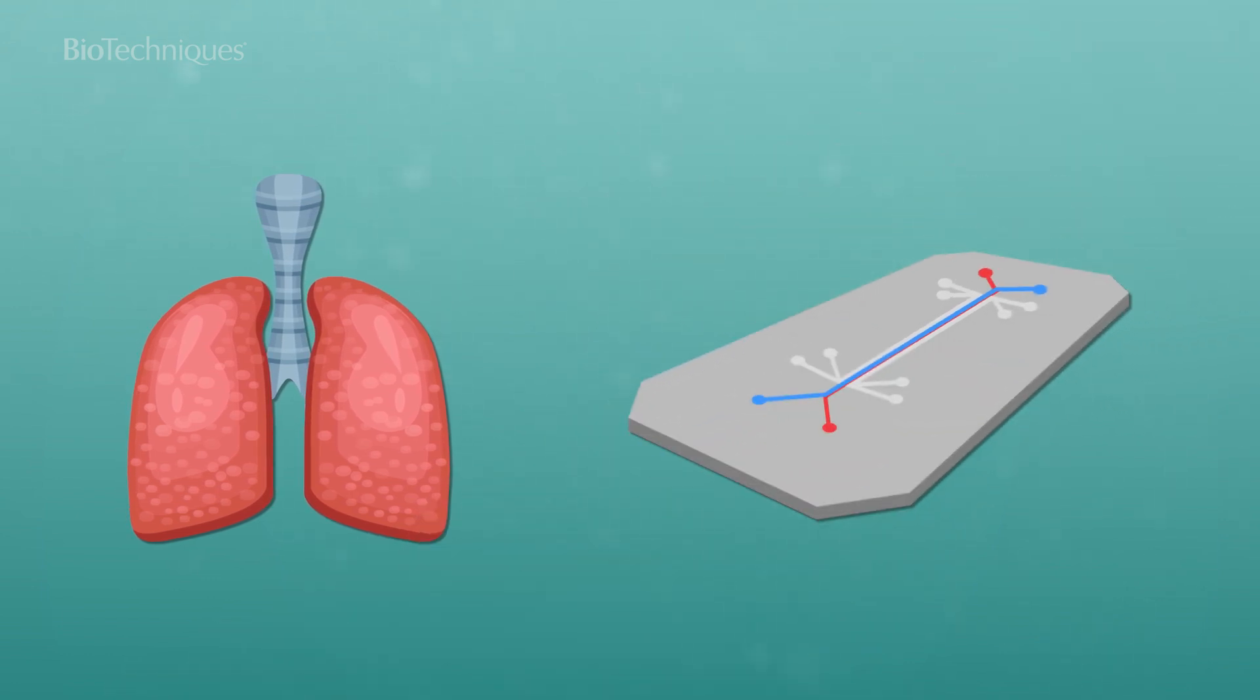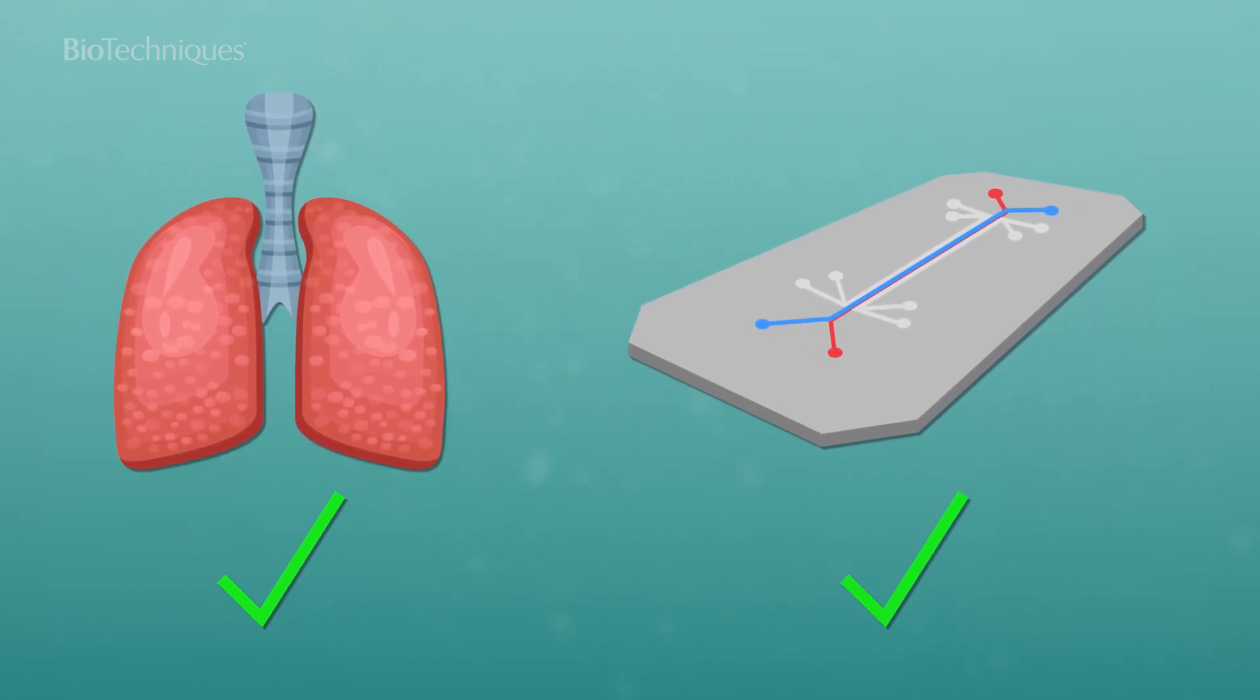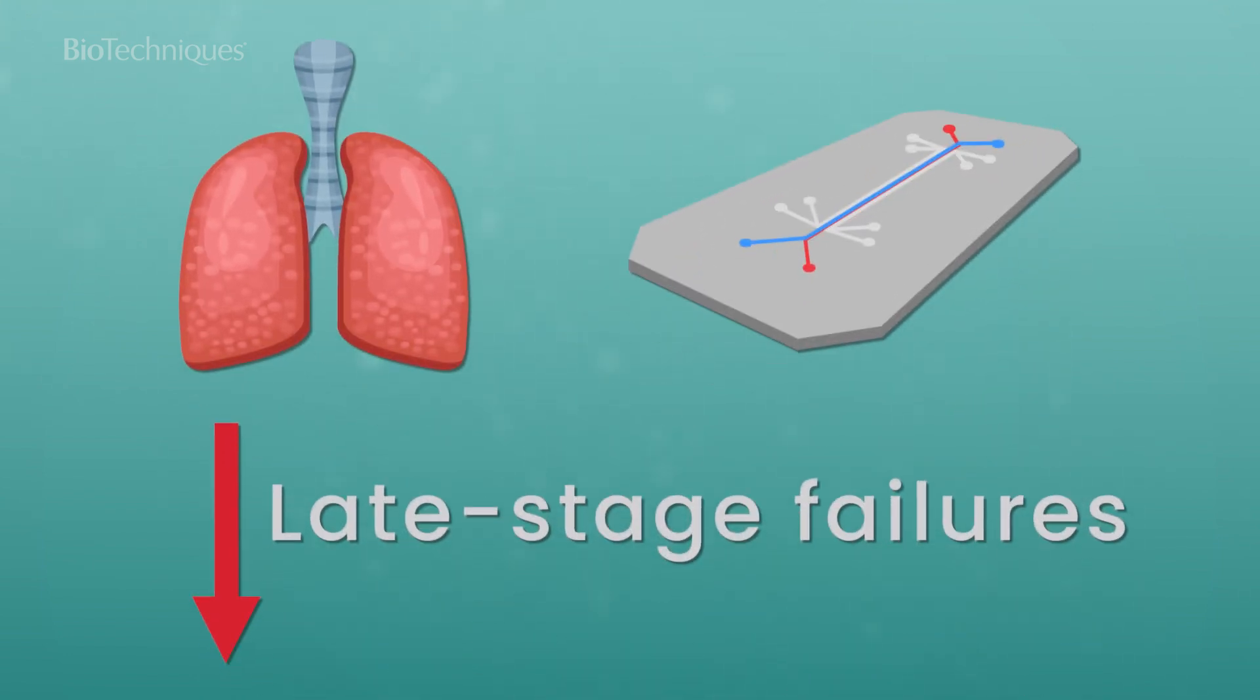As a result, OOCs can more accurately model human responses to drugs, toxins and disease conditions, providing an alternative way to screen drug candidates in the early stages for efficacy and toxicity, reducing the risk of late-stage failures.